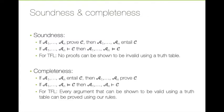When we say that truth-functional logic is complete, we're saying that whenever some premises entail a conclusion, we can prove that conclusion from those premises. Using our symbols, if A1 to AN double turnstile C, then A1 to AN single turnstile C. In plain English, every argument that can be shown to be valid using a truth table can also be proved using our proof rules. Again, that's a good result.